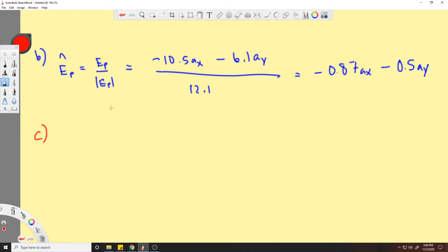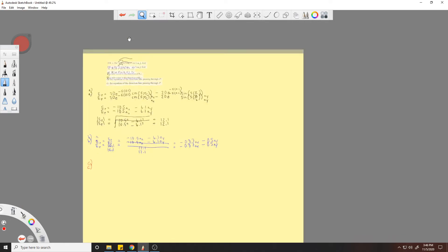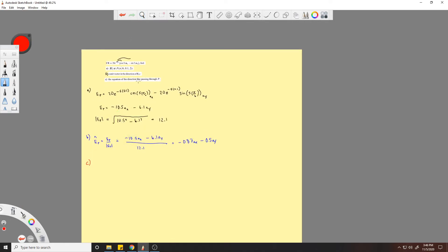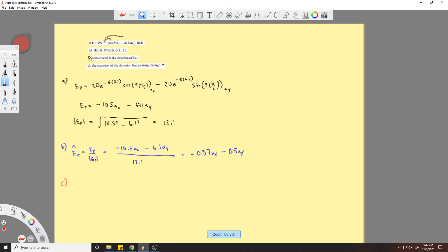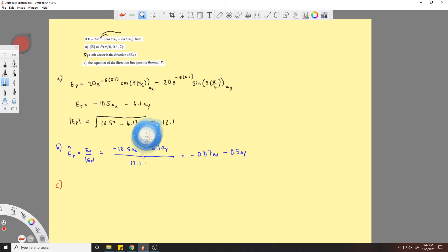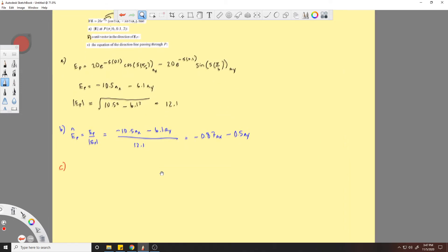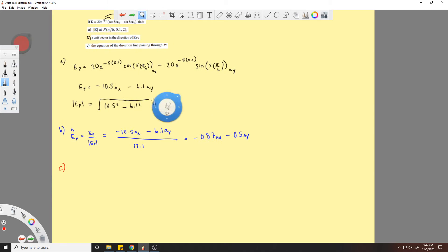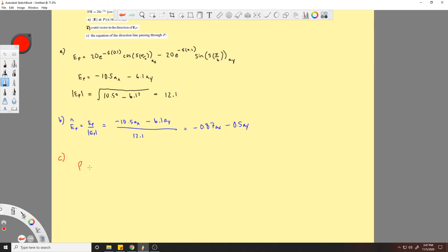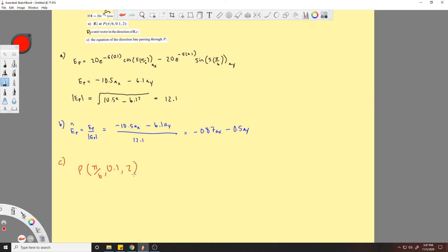Okay, this one's a little more tricky, not bad. We want to find the equation of a line passing through P. That's basically asking for the electric field line equation at a point P, and P is this value here. So P is given: P is (5π/6, 0.1, 2).